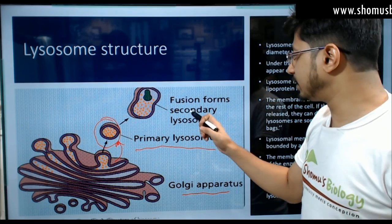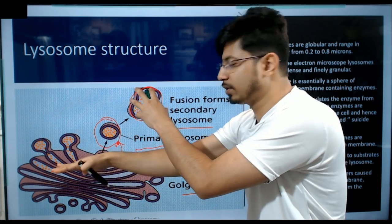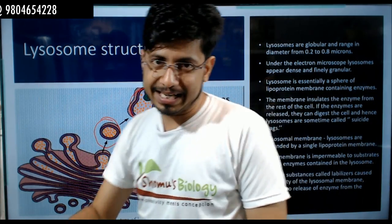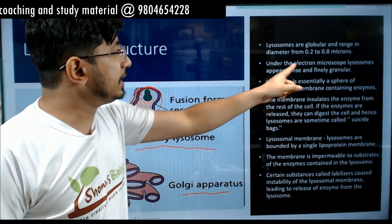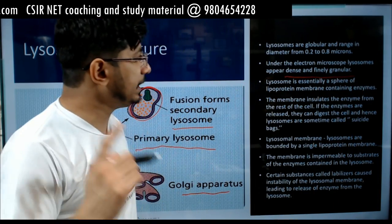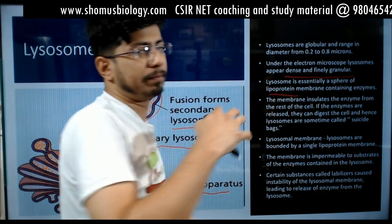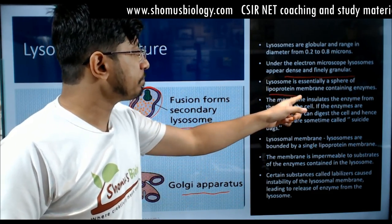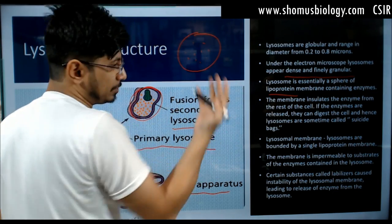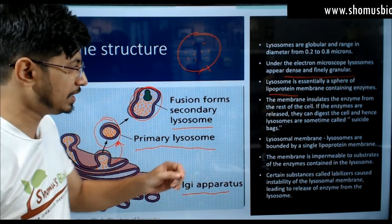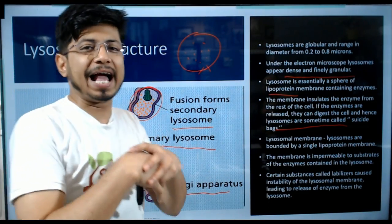Primary lysosomes fuse with other components to become secondary lysosomes. Lysosome formation requires groundwork by the Golgi apparatus and the ER — together called the endomembrane system. Lysosomes are globular, ranging in diameter from 2.2 to 2.8 microns; under the electron microscope they appear dense and finely granular. A lysosome is essentially a sphere of lipoprotein membrane containing enzymes. This membrane insulates the enzymes from the rest of the cell. Lysosome is also known as the 'suicide bag' of the cell because if its membrane is degraded, the hydrolytic enzymes spill out and can kill the cell.